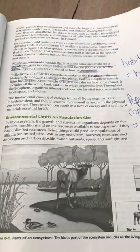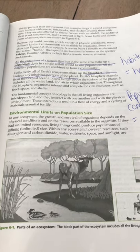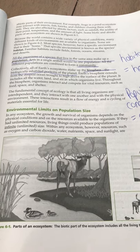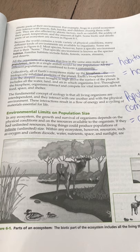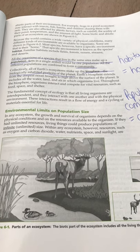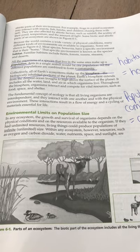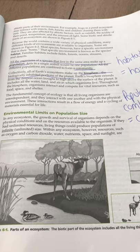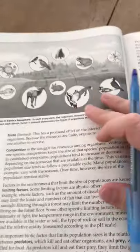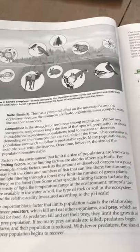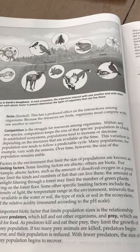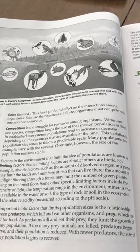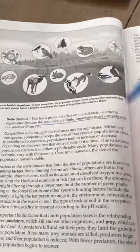Environmental limits on population size. In an ecosystem, the growth and survival of organisms depends on the physical conditions and on the resources available to the organism. If they had unlimited resources, living things could produce populations of infinite or unlimited size. Within an ecosystem, however, resources such as oxygen and carbon dioxide, water, nutrients, space, and sunlight are finite or limited. This has a profound effect on the interactions among organisms. Because the resources are finite, organisms must compete with one another to survive. That is important.